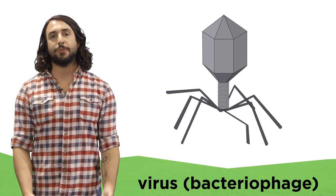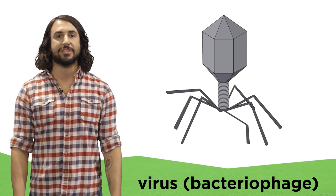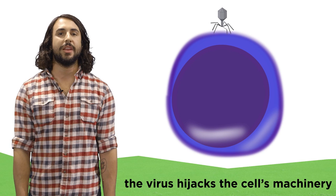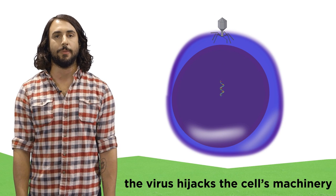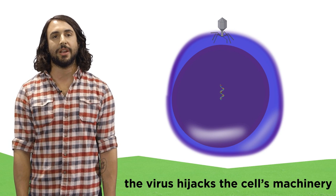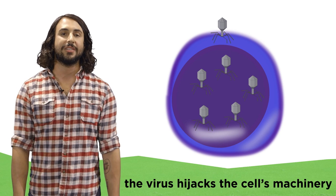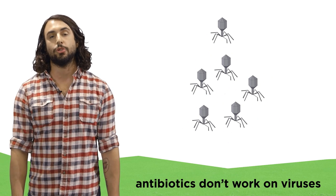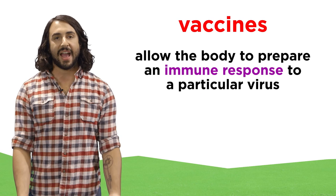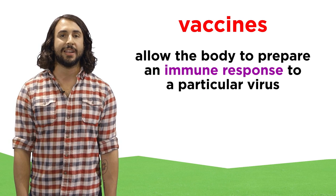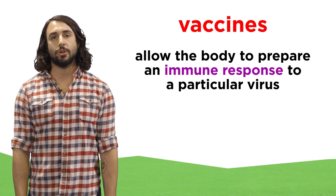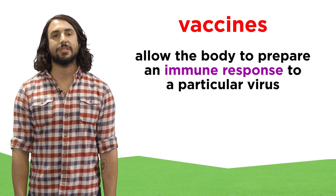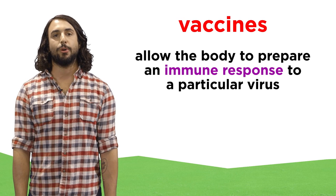Viruses, however, have different structures and mechanisms of survival from bacterial cells, as viruses are not cells at all. They are much tinier and operate by inserting their genetic material into a host cell, hijacking the cellular machinery and forcing it to generate more viruses, while typically destroying the cell in the process. Thus antibiotics do not work on viruses. Instead, vaccines have proven effective in training the human body to prepare a response to certain types of viruses by introducing a piece of the virus so that the immune system can recognize and remember it for optimal future response.